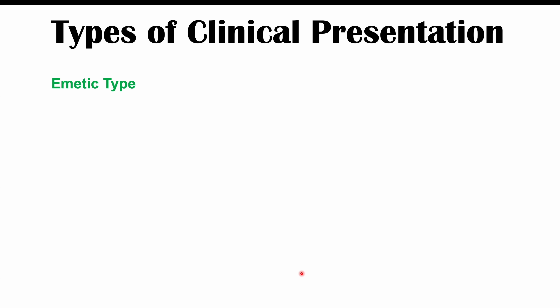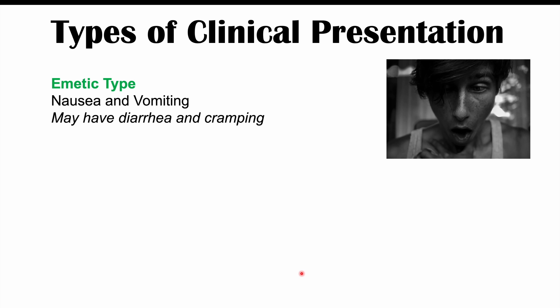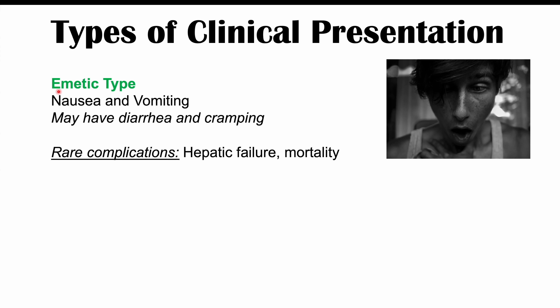In the emetic type, we see nausea and vomiting, and possibly diarrhea and abdominal cramping as well. When vomiting is a feature of food poisoning, Bacillus cereus infection is something to consider, along with norovirus. Rare complications of the emetic type include hepatic failure and even mortality, though these are extremely rare.